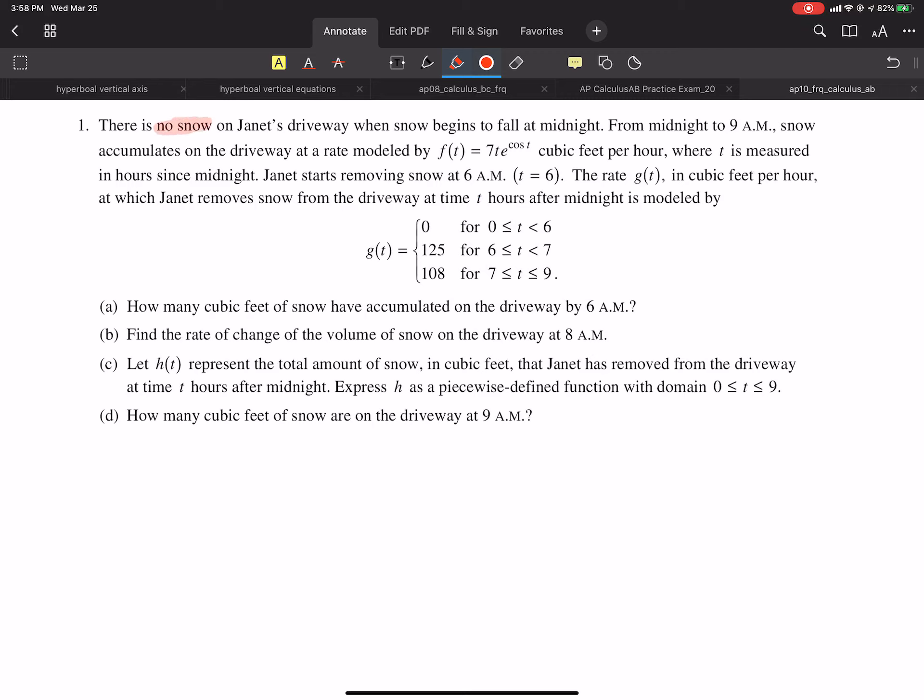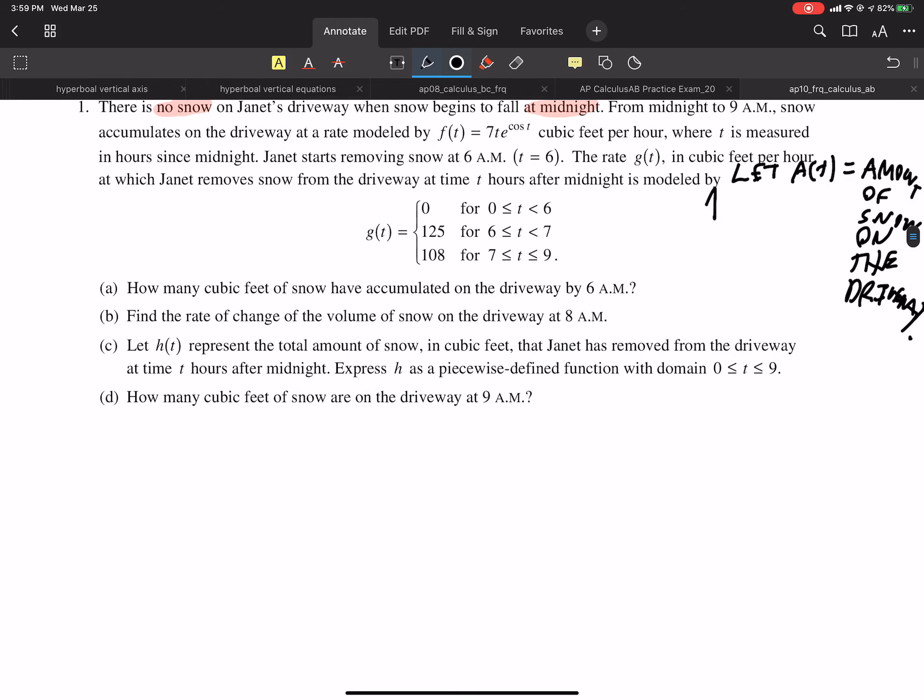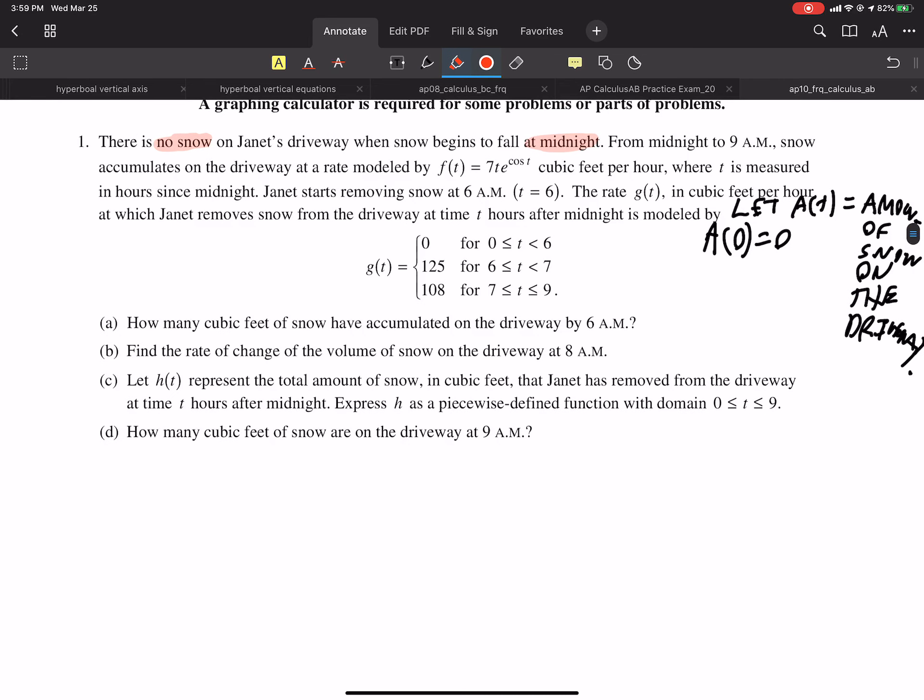So we're starting with no snow at midnight. You know what? Let me just go ahead and write that. Let, at t equals zero. I'm going to do let A of t equal the amount of snow on the driveway. So, at t equals zero, A equals zero. Or I could just rewrite that as A of zero is zero. So we know we're starting with no snow.